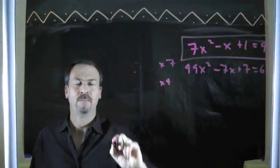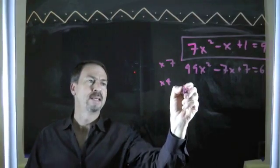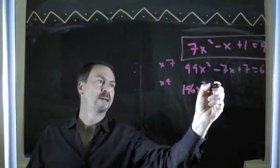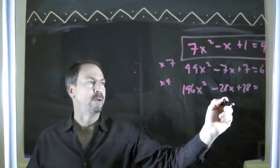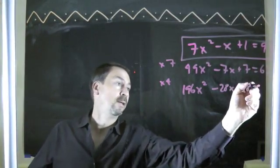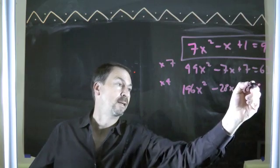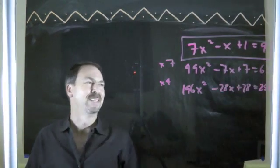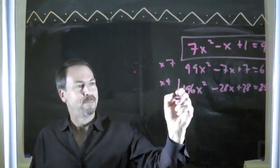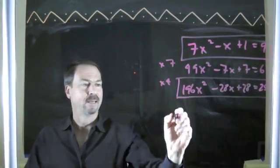Got an odd number in the middle. Okay. To deal with that, let's multiply through by 4. What's it going to be? 196x squared minus 28x plus 28 equals 252. There we go. Alright. 252. Big numbers, but I think I can handle it.